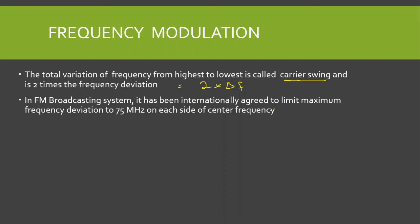In the FM broadcasting system, it has been internationally agreed to limit the maximum frequency deviation to 75 kilohertz on either side of the center frequency. FM broadcasting operates from 88 MHz to 108 MHz, and the channel bandwidth — that is, the separation between adjacent stations — is 200 kilohertz.